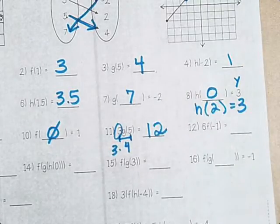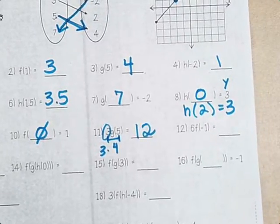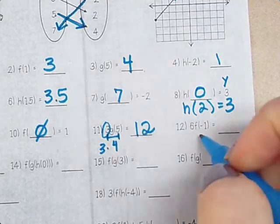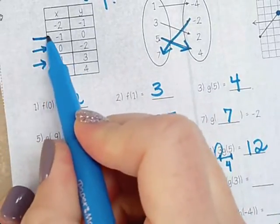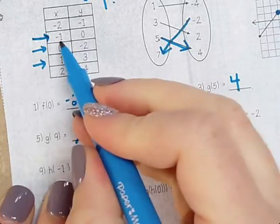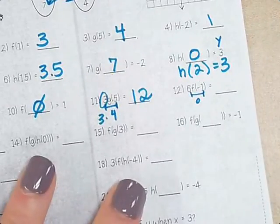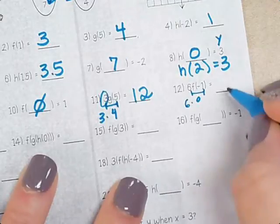So do number 12 now. What is f(-1)? It's 0. So f(-1) is 0. So then you multiply that times 6? 0. Yep.